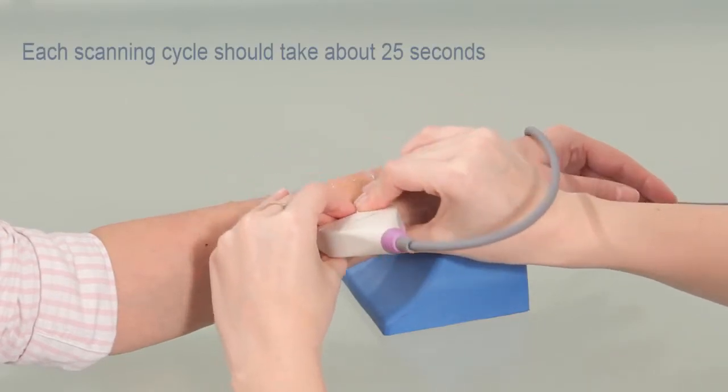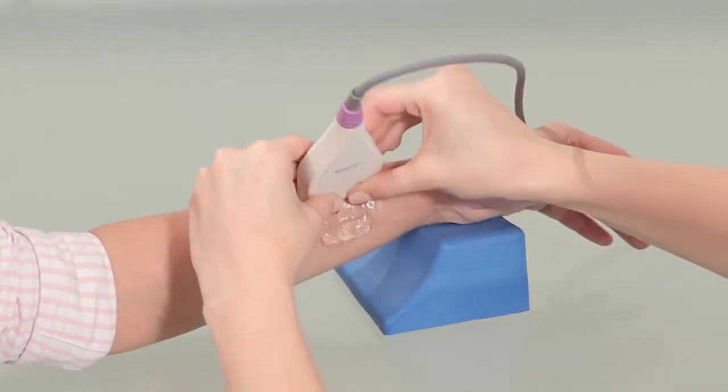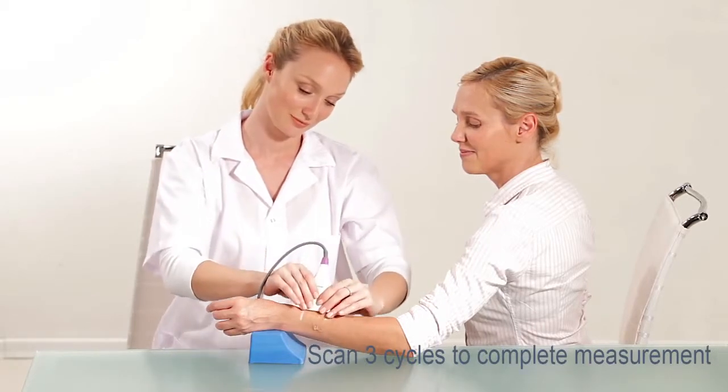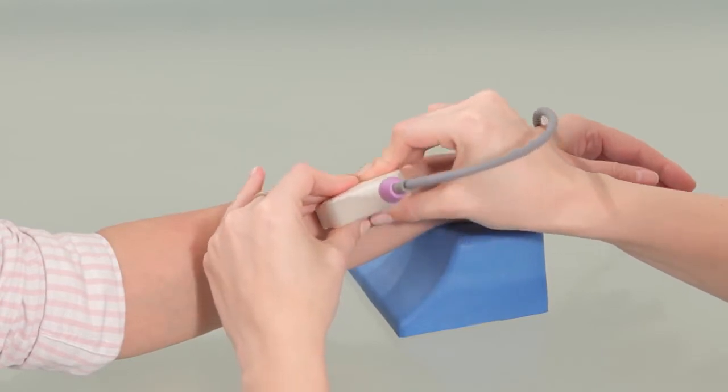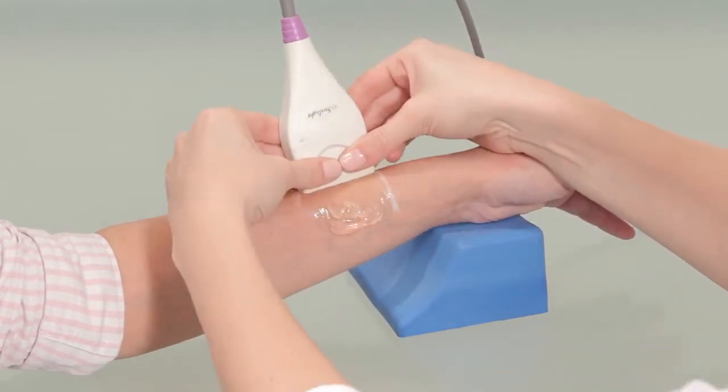Each scanning cycle should take about 25 seconds. Scan three cycles to complete the measurement. If the information is insufficient, the system may prompt you to perform up to two extra cycles.